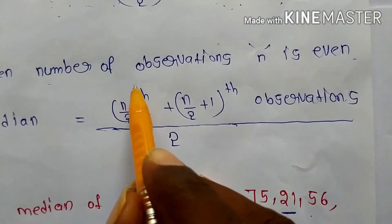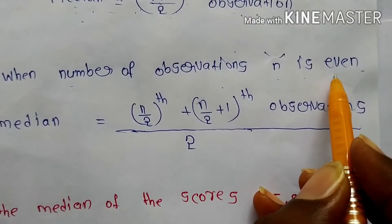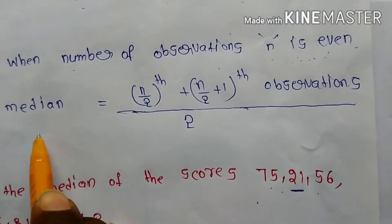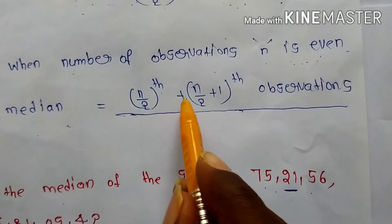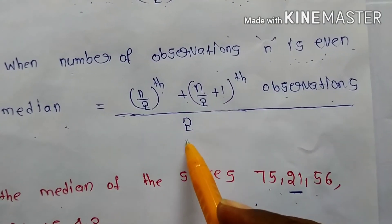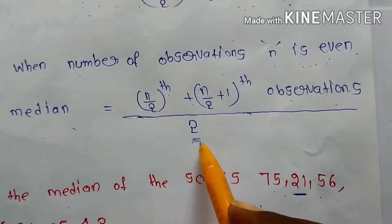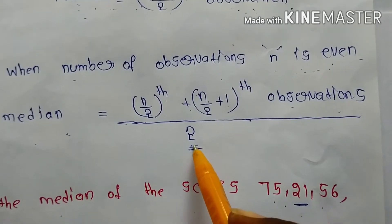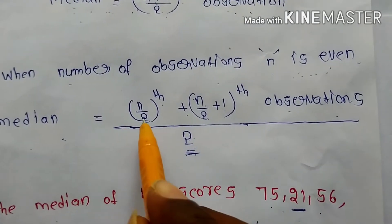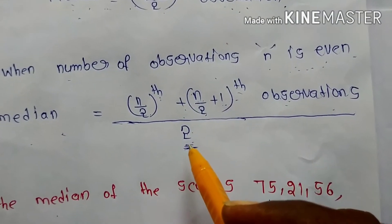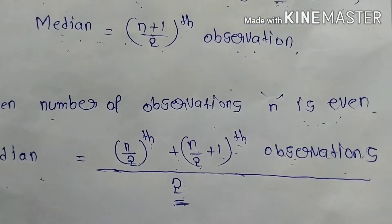For an even number of observations, we use a different formula. When n is even, median equals the average of the (n/2) and (n/2 + 1) observations. That is, the average of those two middle observations.